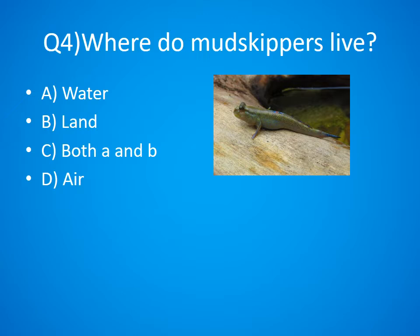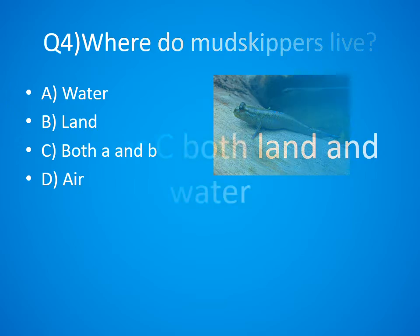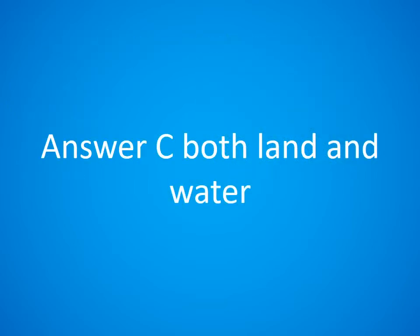Question 4. Where do mudskippers live? A. Water, B. Land, C. Both A and B, D. Air. The answer is C. Both land and water.